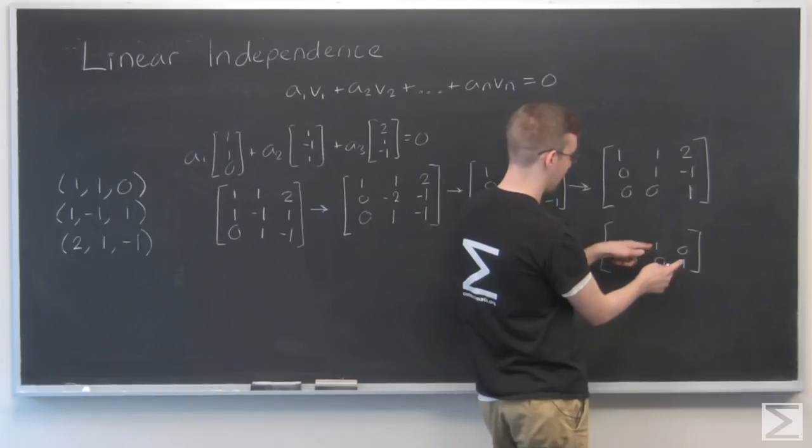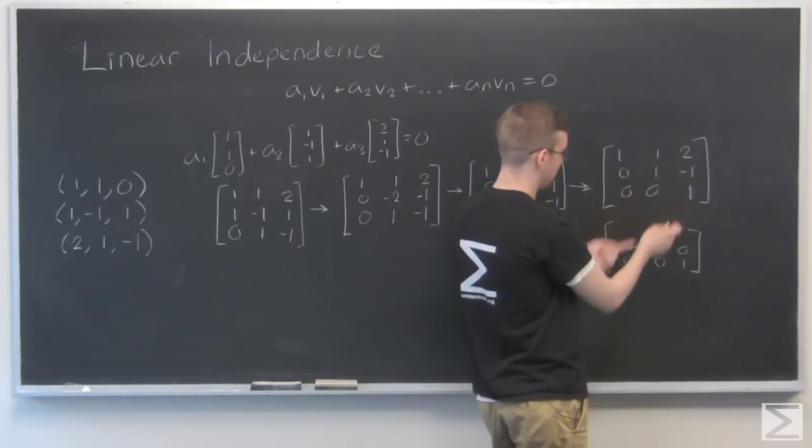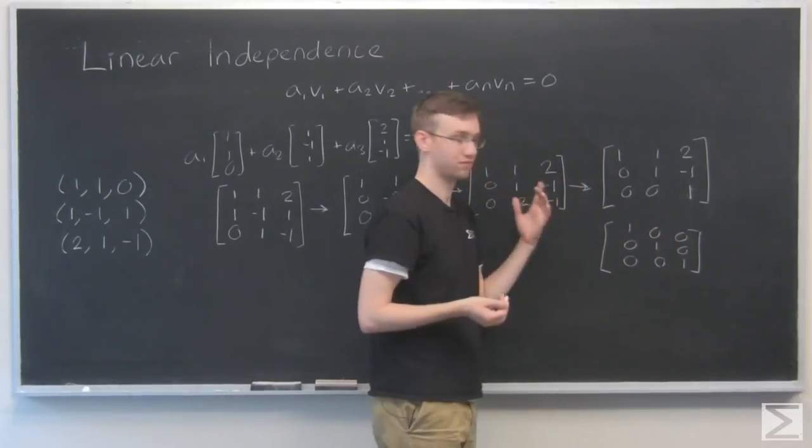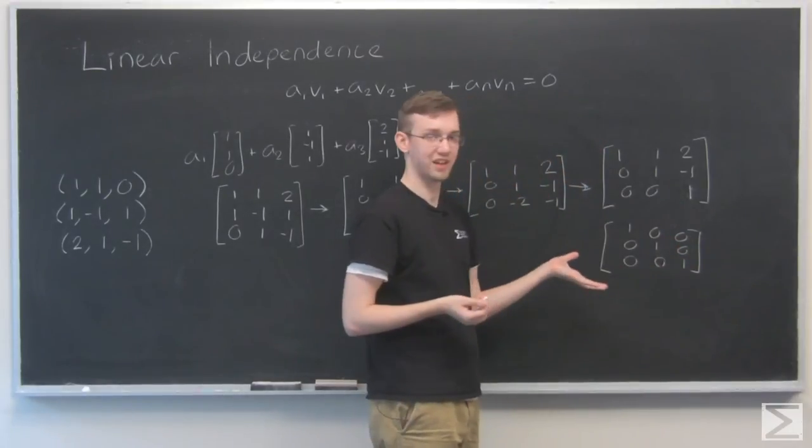Okay, so that last row I can divide by negative 3 and I'm going to get a 1 there. With that 1, I can add this row onto this row and I'll get a 0 there. I'll get a 0 here. And now that I have these, I can add combinations of these to this row right here and I'm eventually going to get 0s there as well. So, I'm left with a beautiful identity matrix.